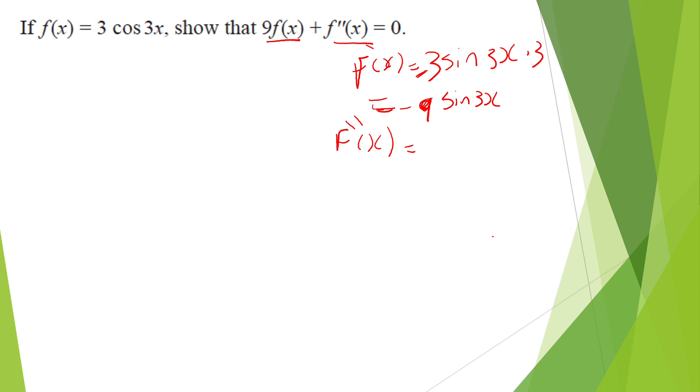f double dash will give me negative 9. Differentiation of sine is cosine, so it will be cosine 3x times 3, which gives me negative 27 cosine 3x.